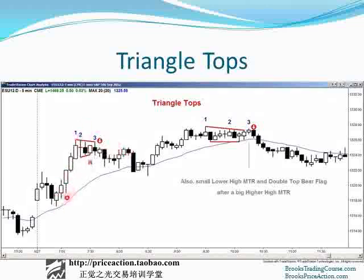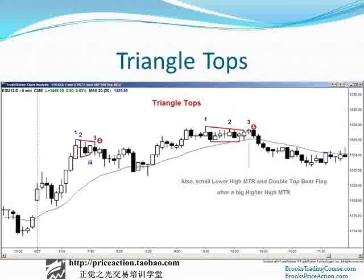Bull trend. Here's a trend line, trend line break, test of the moving average, higher high major trend reversal — short here. And then a lower high, and the lower high came in the form of a small double top. So that's a reasonable swing short. A lot of times these small double tops look very unimportant when they're coming, but if you're aware of the possibility that they are a lower high major trend reversal after a higher high major trend reversal, you should take the short looking for a swing down. Even if the probability is only 40%, the reward is at least twice the size of the risk, and that gives it a favorable trader's equation.